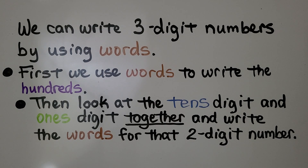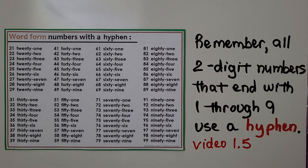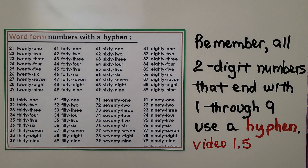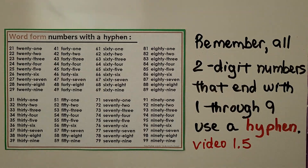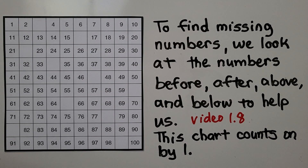Back in video 1.5, we learned about using hyphens for two-digit numbers. Remember, all two-digit numbers that end with a one through a nine use a hyphen.